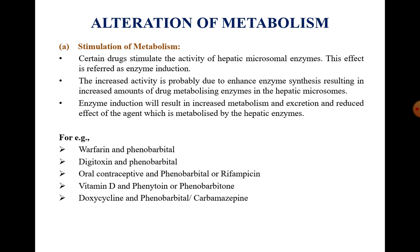Oral contraceptives with phenobarbital and rifampicin: phenobarbital and rifampicin induce hepatic enzymes and increase the metabolism of steroidal hormones like progesterone and estrogen, reducing the effectiveness of oral contraceptives. Next example, vitamin D with phenytoin and phenobarbital: vitamin D and steroidal hormones are chemically similar compounds. Hence, disturbances of calcium metabolism and development of rickets and osteomalacia take place with the use of anticonvulsants such as phenobarbital and phenytoin.